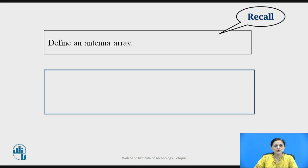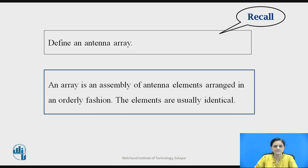Before starting the types of an antenna array, you can pause the video here for a second and recall what an antenna array is. An antenna array is an assembly of antenna elements arranged in an orderly fashion, and these elements are usually identical. Similar elements are connected in an orderly fashion.